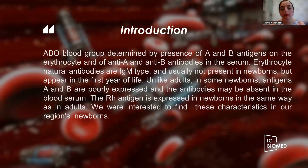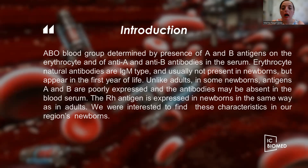I want to tell you a few words about the introduction. As everybody knows, ABO blood group is determined by the presence of A and B antigens on the erythrocytes. In the case of the ABO blood group, natural antibodies are also present — these are the anti-A and anti-B antibodies, present in the serum. Erythrocyte natural antibodies are of immunoglobulin type, and usually they are not present in newborns.